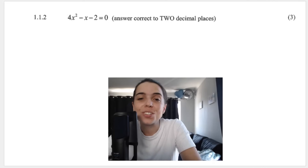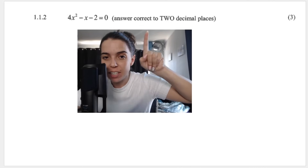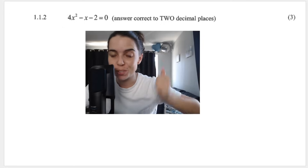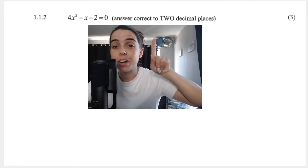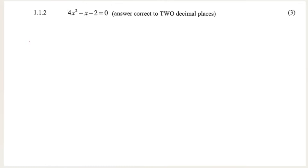For this next equation, the instructions say solve for x, but what is given in brackets is a massive hint: they want the answer correct to two decimal places. So you need to use the quadratic formula. Because it says two decimal places, we know we're going to use the quadratic formula — you can't factorize this trinomial in any other way. So let's use the quadratic formula.